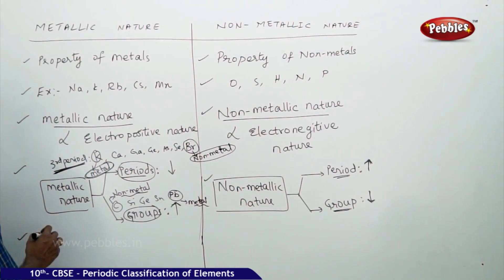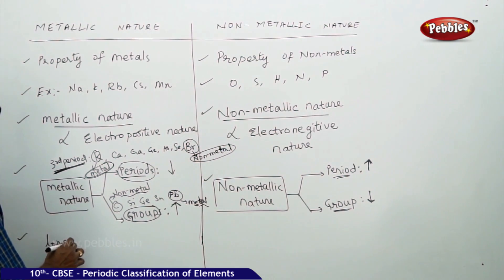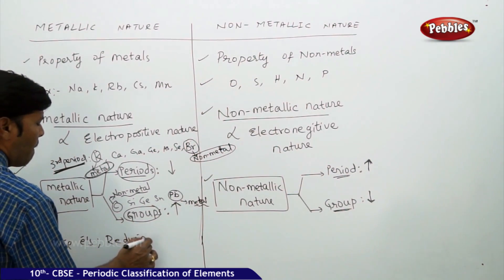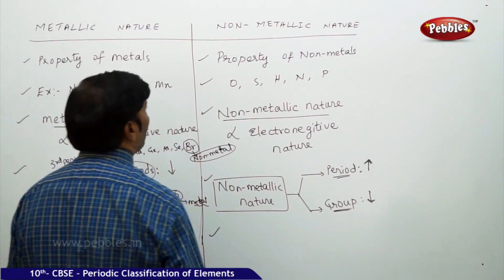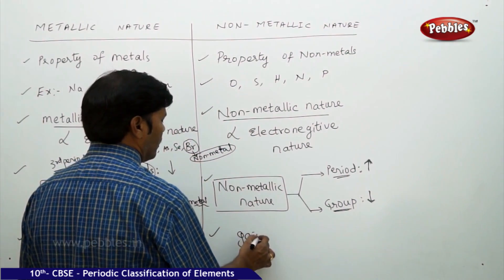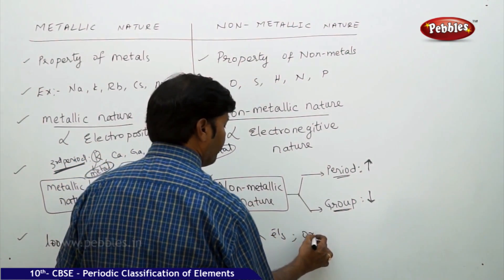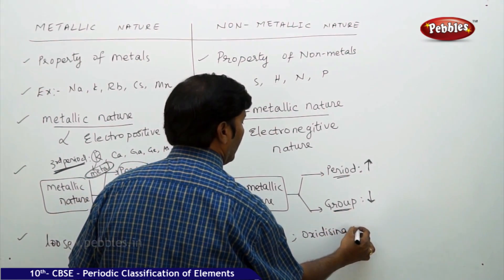From this discussion, all metals lose electrons, so they are reducing in nature. And all non-metals gain electrons, hence they are oxidizing in nature.